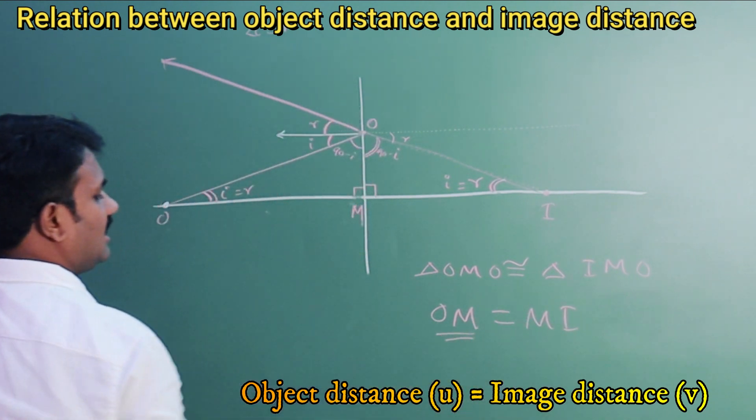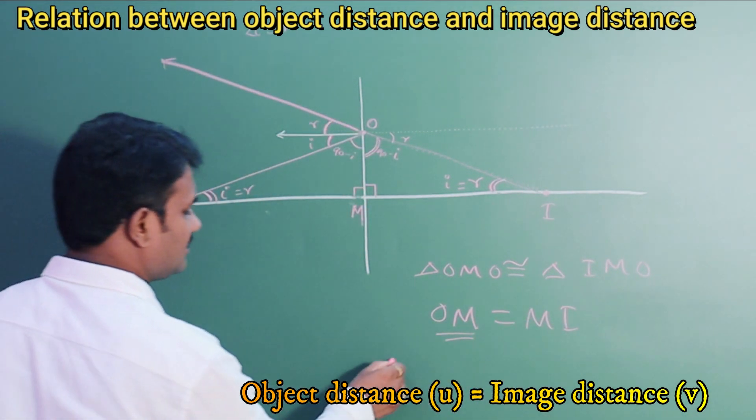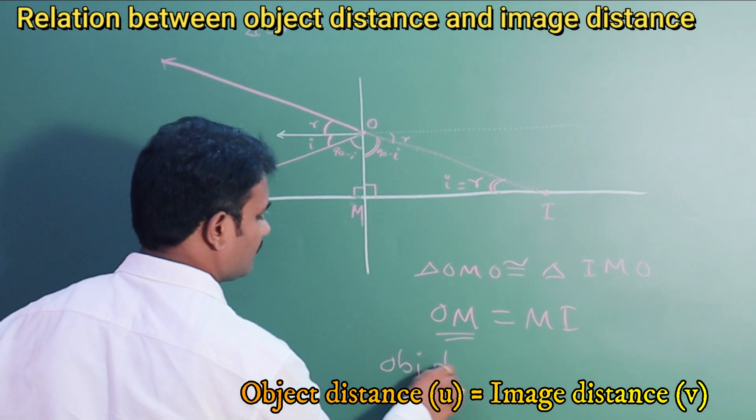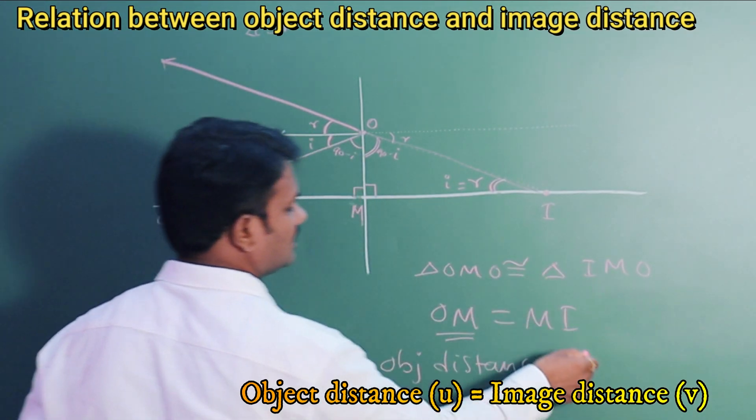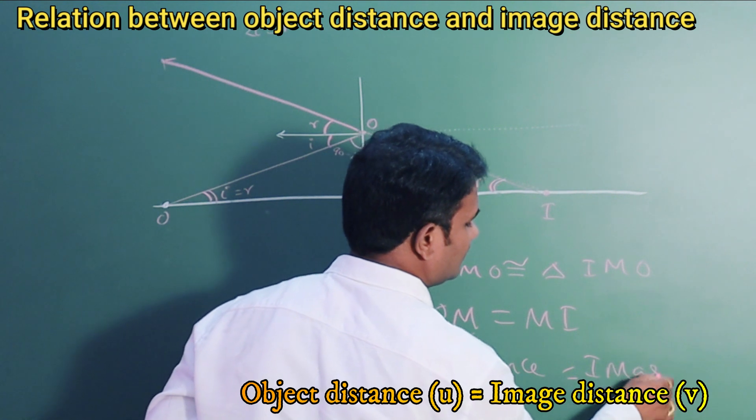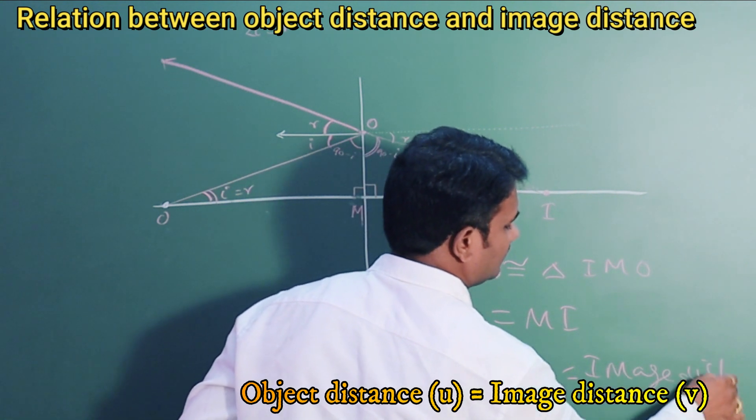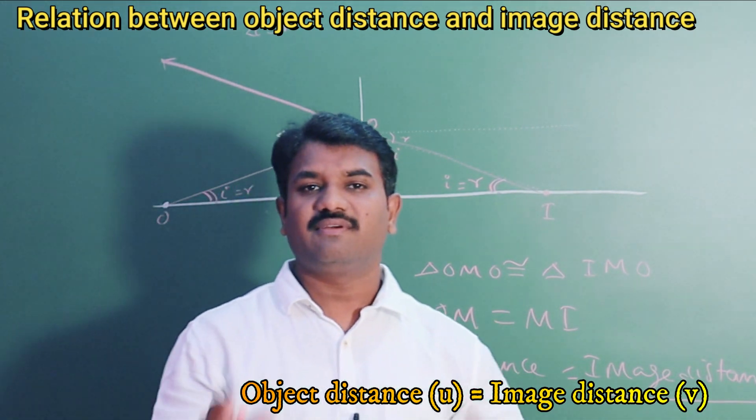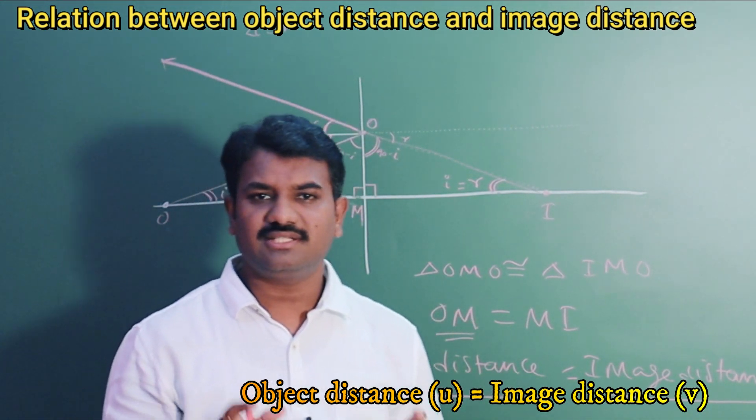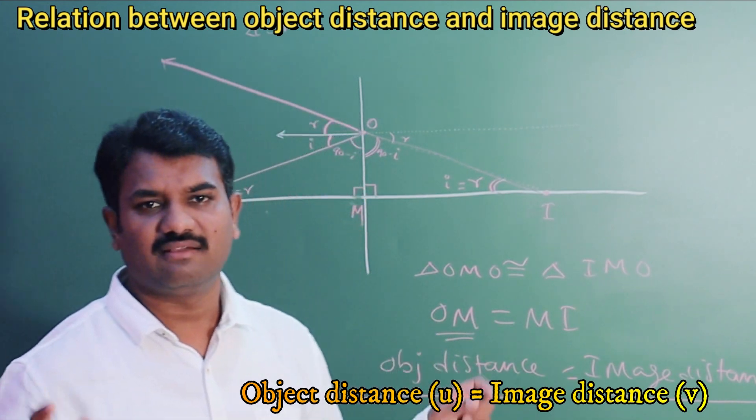Where O, M is called as the object distance, where M, I is called as image distance. Hence, it is proved that in case of a plane mirror, the object distance and image distance are equal.